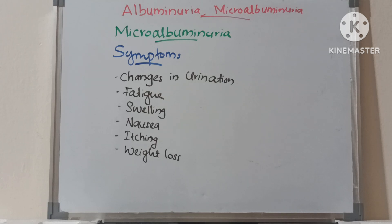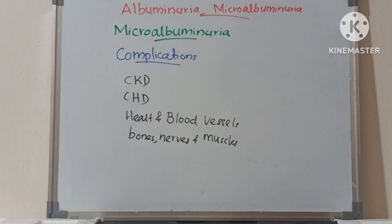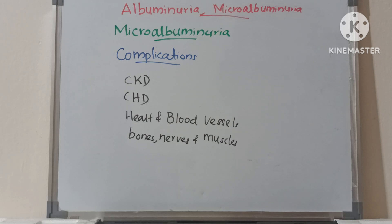Since microalbuminuria doesn't show symptoms, it is important to have a regular test — once a year — if a person has diabetes. Microalbuminuria is an early sign of chronic kidney disease and risk of coronary heart disease. Long-term complications can include problems affecting the heart and blood vessels, bones, nerves, and muscles. Having treatment and making lifestyle changes can help slow down and reduce the risk.